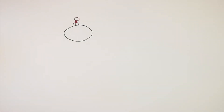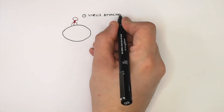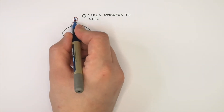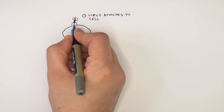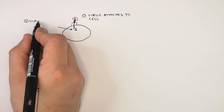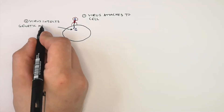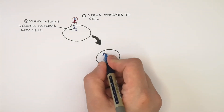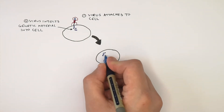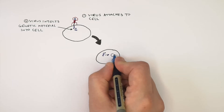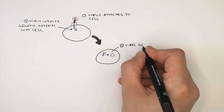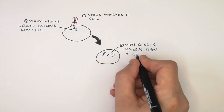A virus is going to bind and attach onto a cell. The virus then injects its genetic material into the cell. Once inside, the viral genetic material forms a circle of genetic material, as you can see here.